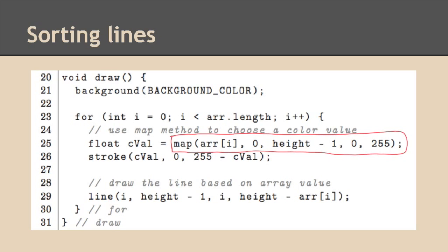So map takes five parameters. The first one is our value that we're going to scale. And in our case, that's array value sub i. The next two parameters tell us the range that that value is in. And so that array value is between zero and height minus one. And the next two, the final two parameters in the map method call, tell us the range that we're going to scale that into.